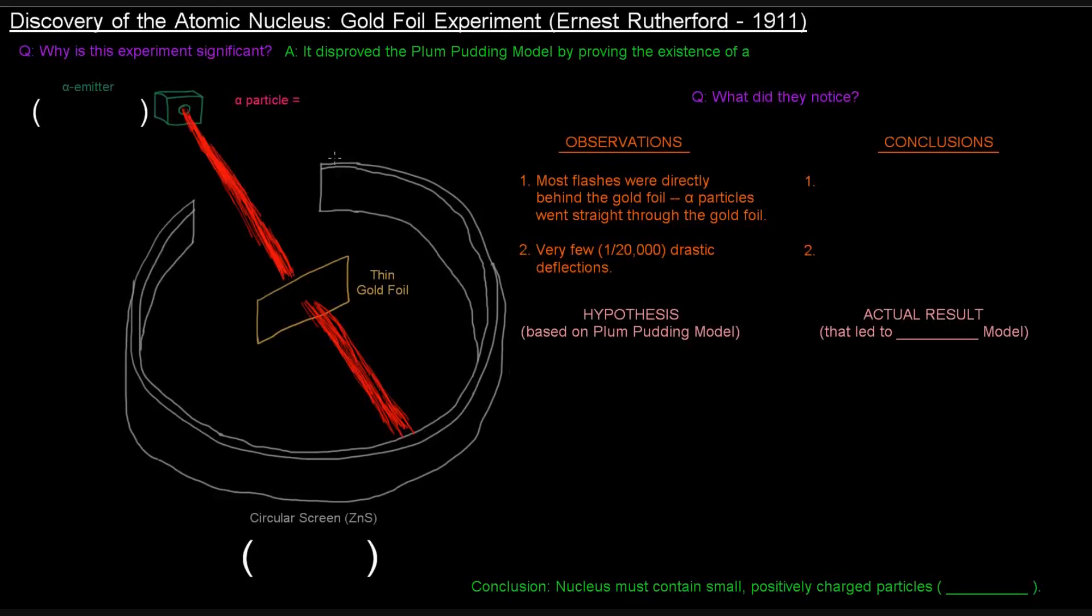Next up is the gold foil experiment by Ernest Rutherford in 1911, where he discovered the atomic nucleus. His experiment was pretty significant because it disproved the plum pudding model by proving the existence of a small, dense, positively charged nucleus at the center of the atom.